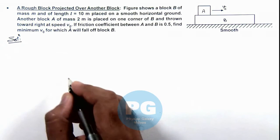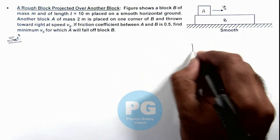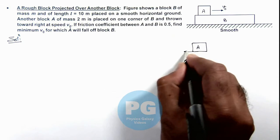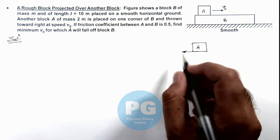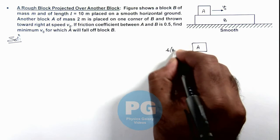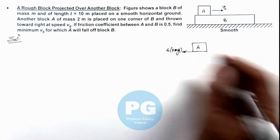We can see if we just draw the forces on block A, the only force acting on it is the friction force. If friction coefficient is μ and its mass is 2m, it'll experience the friction μ × 2mg, as this is the normal reaction.